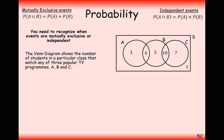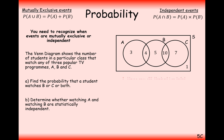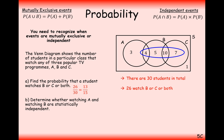Here we have three circles in a Venn diagram, but A and C don't overlap. The Venn diagram shows the number of students watching TV programs A, B, or C. To find the probability that a student watches B or C, we add all students inside the B or C circles: 4 + 5 + 10 + 7 = 26 students out of 30 total. So the probability is 26 out of 30.